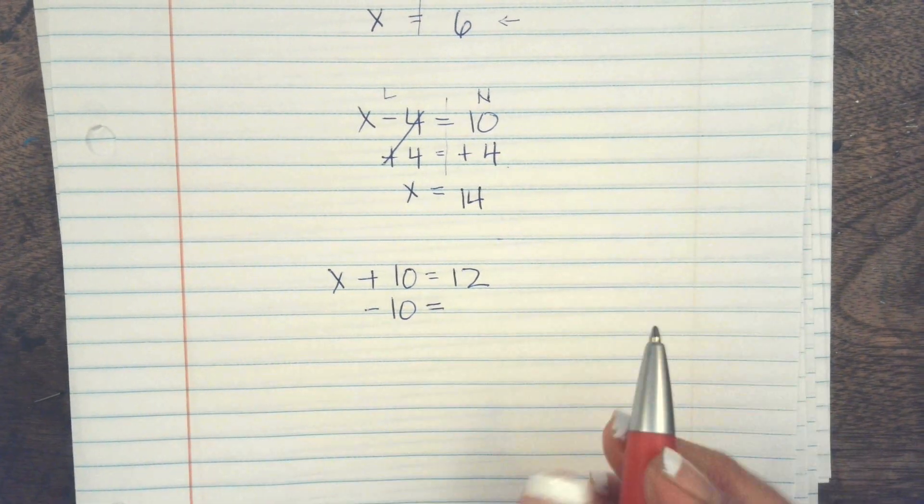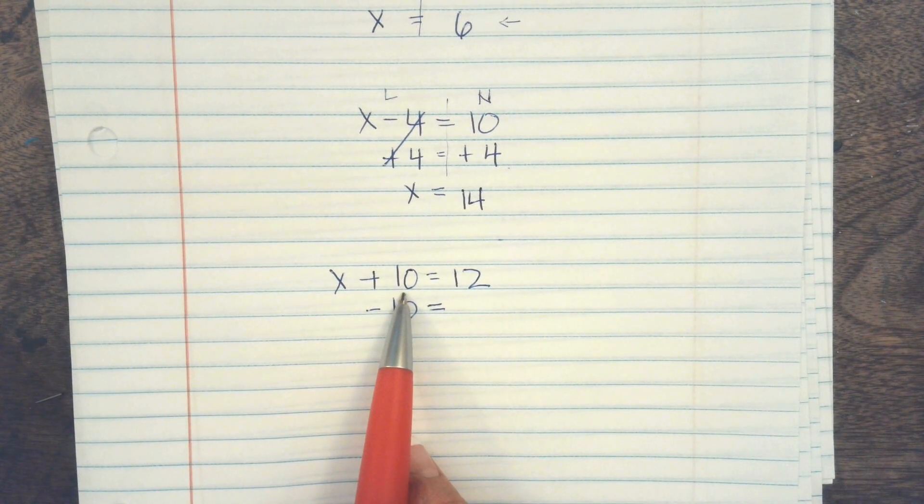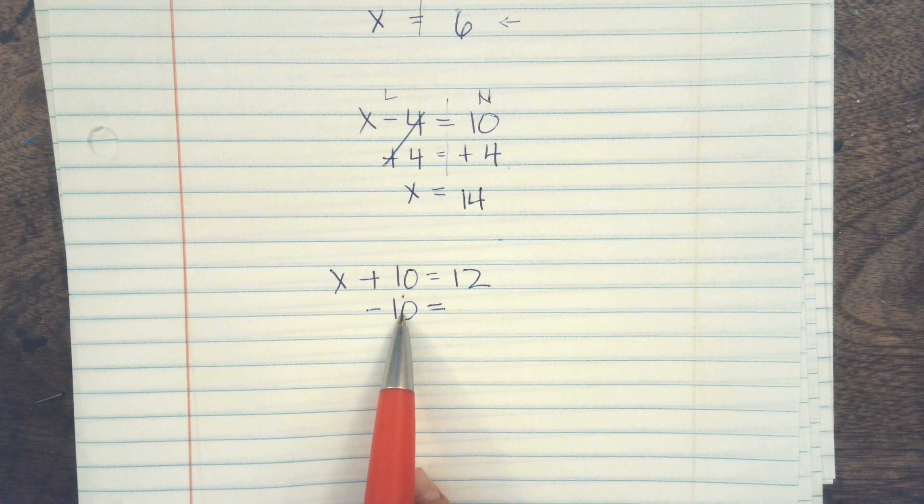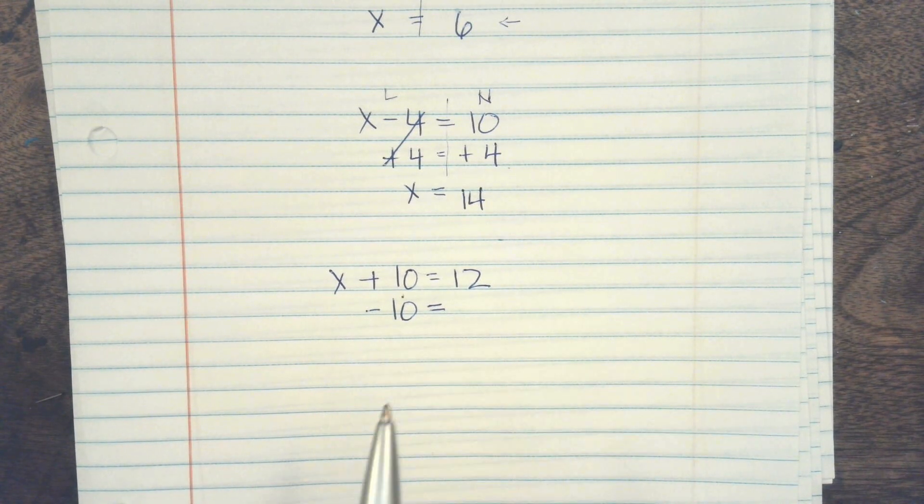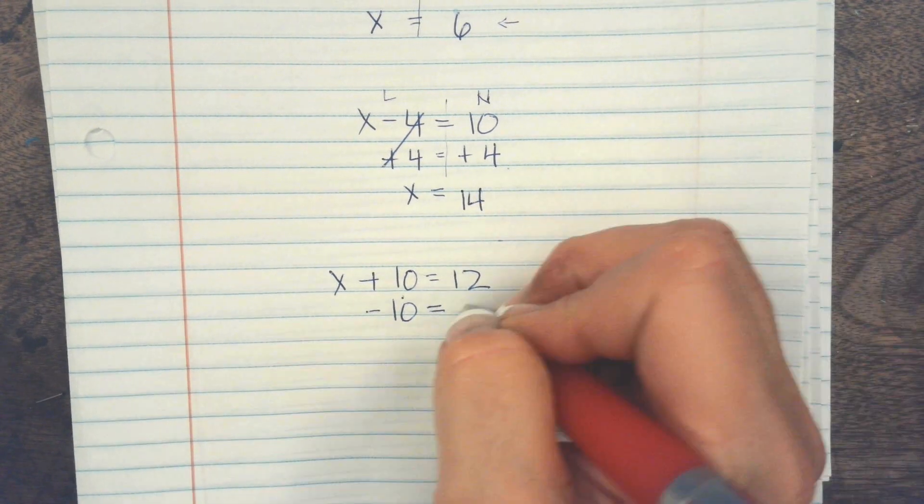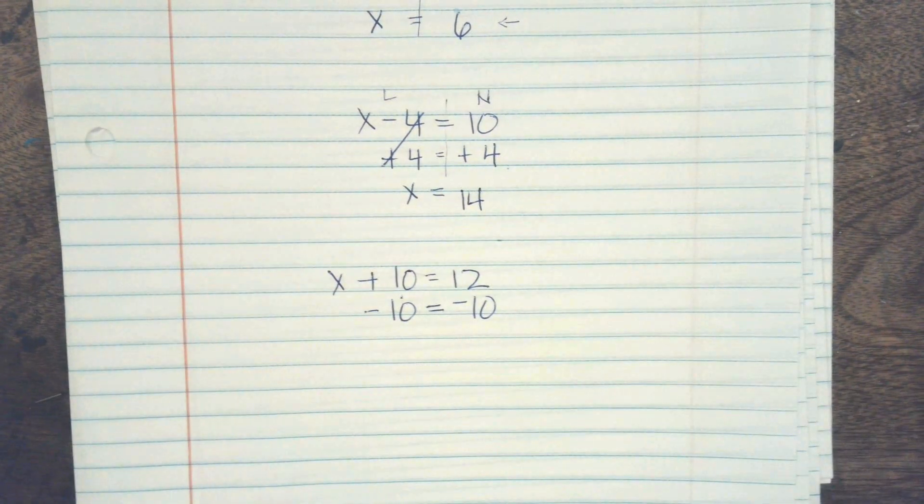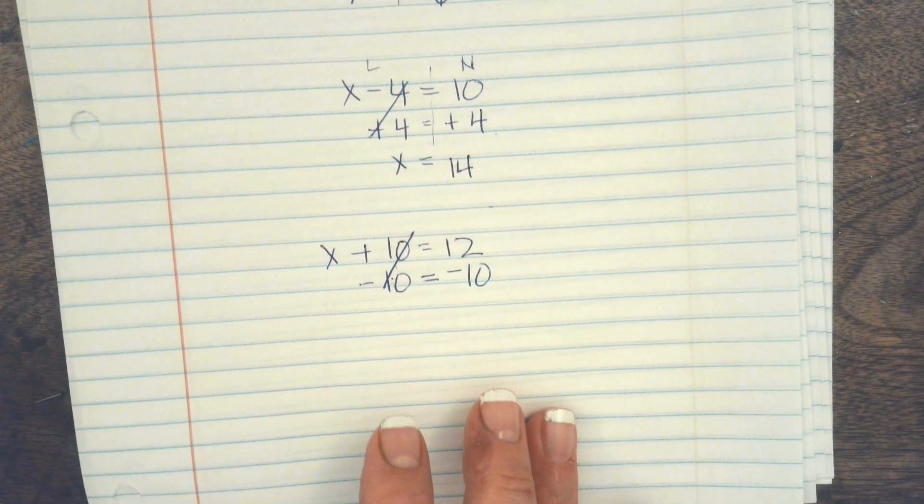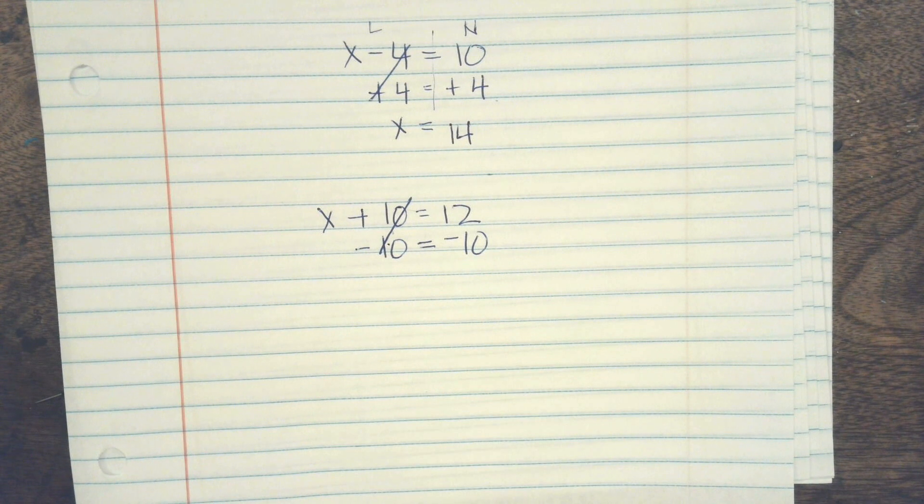So my first rule is we have to get our numbers on this side. So we did that. My second rule is whatever I do to one side of the equation, we have to do the other. Exactly. So I have to subtract 10 on this side. Now I cross this out.